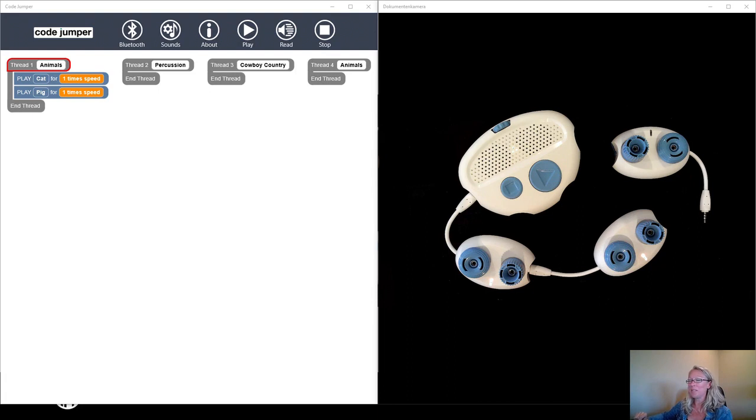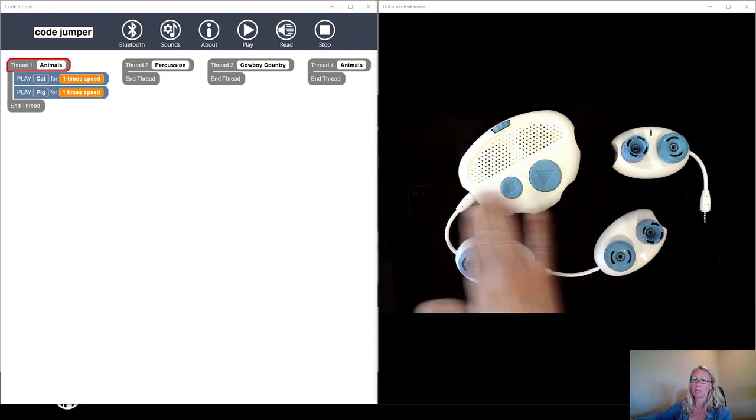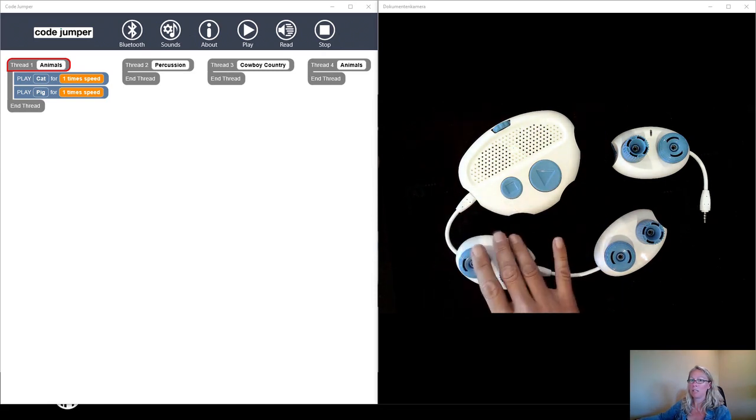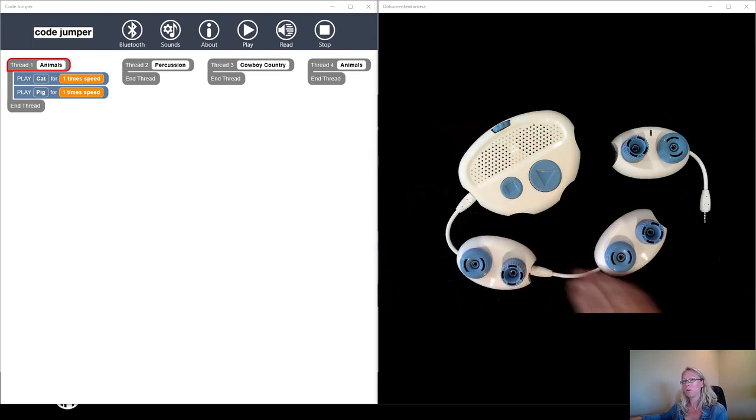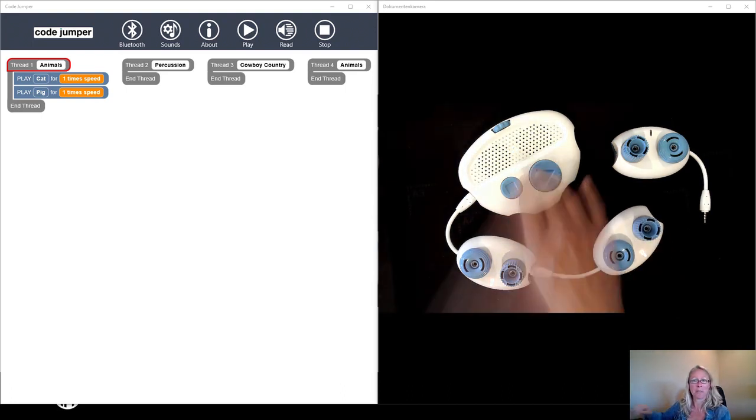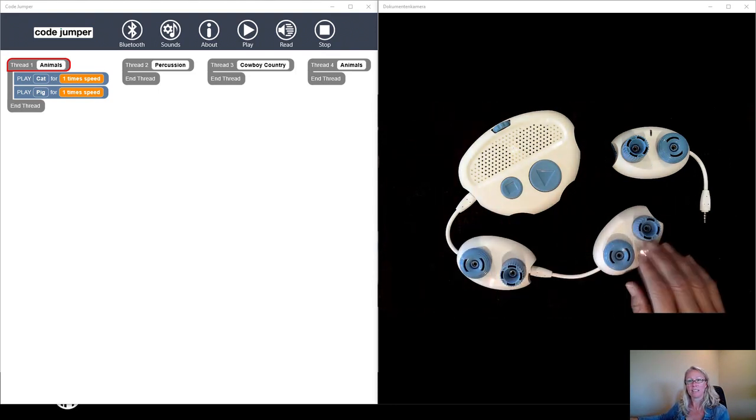Have students now press the play button and show them how to trace the code. So they're going to press the play button and as the sounds are heard they're going to use their fingers to follow along the cord coming out of thread one and gently touch the white part of the play pod that is making that sound and then follow the cord to the next play pod when the next sound is heard. So we're going to practice that right now. Push the play, trace the code, the cat, and now a play sound.